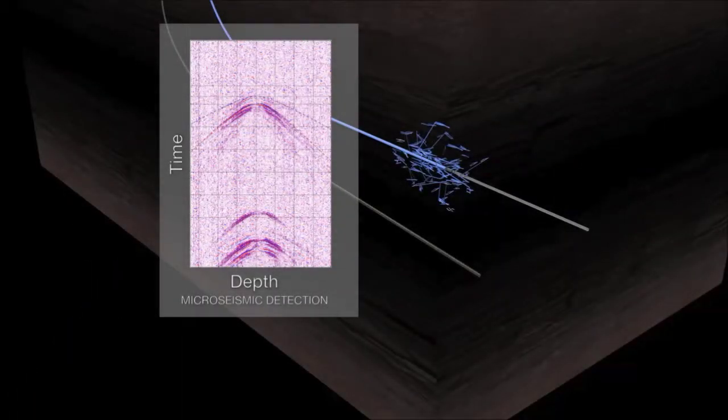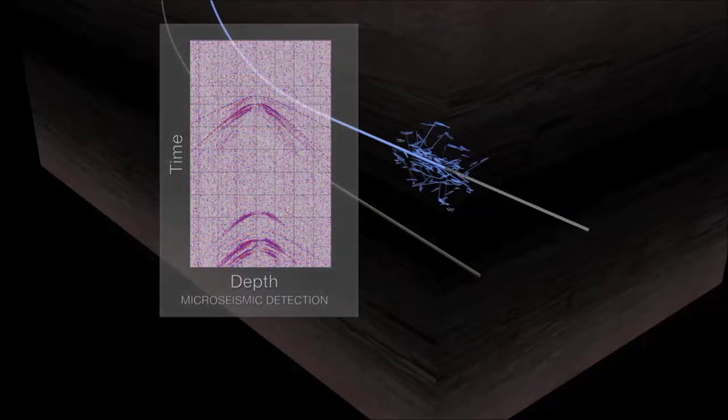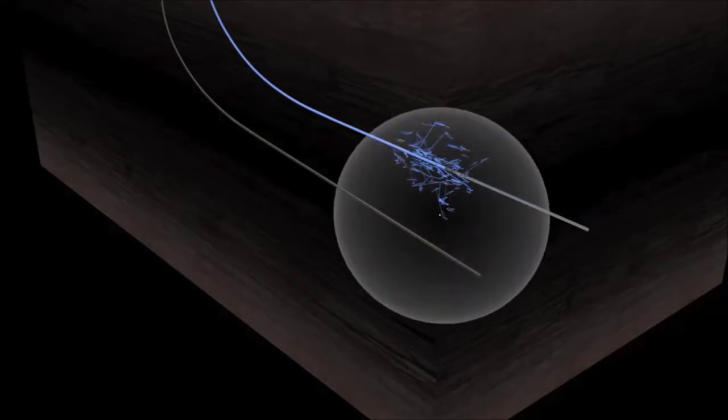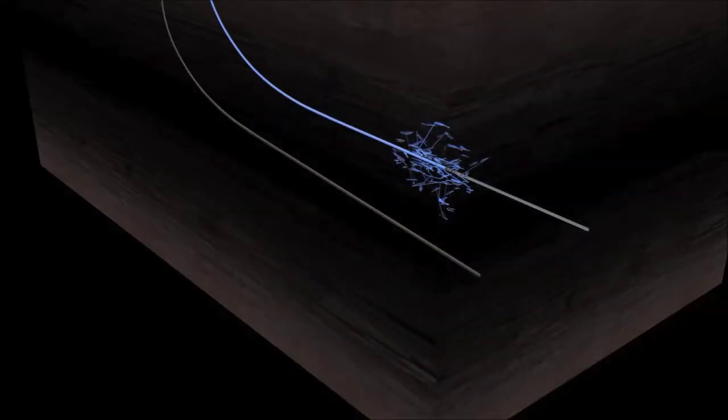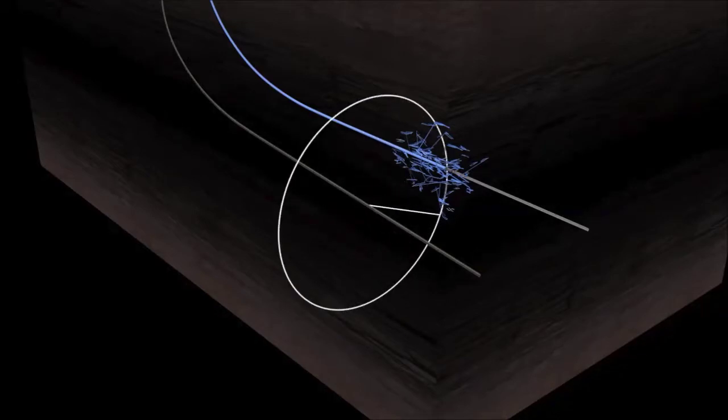Therefore, the distance can be determined from the signal using a local velocity model. With a single optical fiber, the geometry allows only the distance and position along the fiber to be resolved. Therefore, the event may originate at any point on the displayed radius.